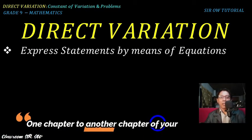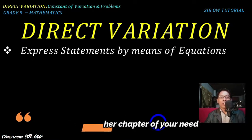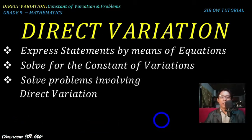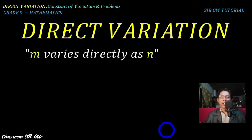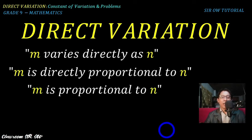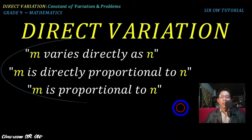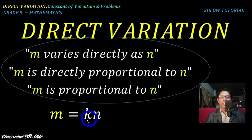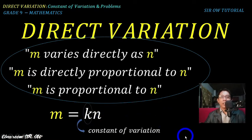In particular, we will express statements by means of equations where k is the constant of variation. We will also solve for the constant of variation and solve problems involving direct variations. If you have a statement like 'm varies directly as n,' this means m is directly proportional to n, which translates to m = kn. If m increases, n also increases; if m decreases, n also decreases. Here, k is our constant of variation.